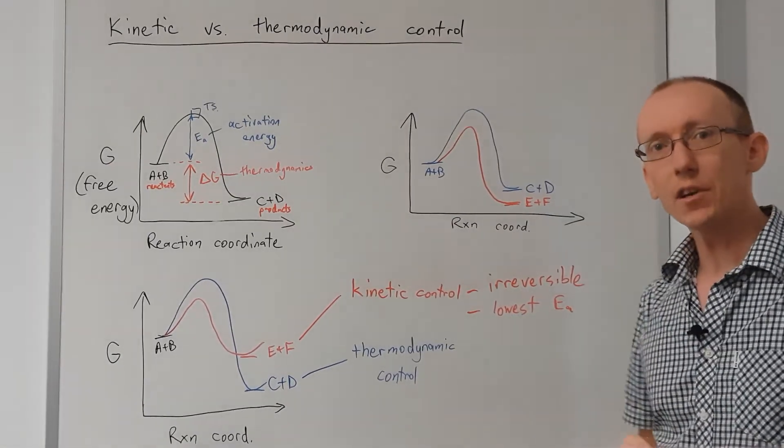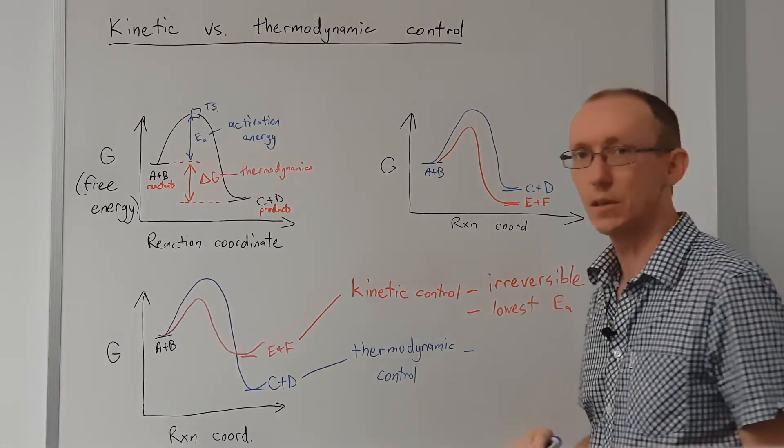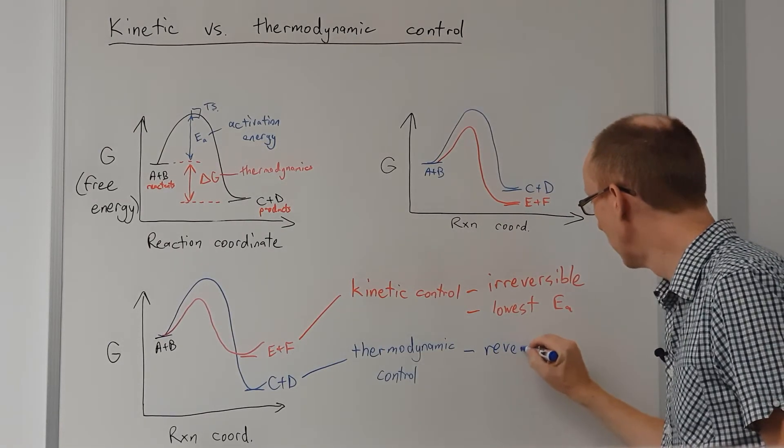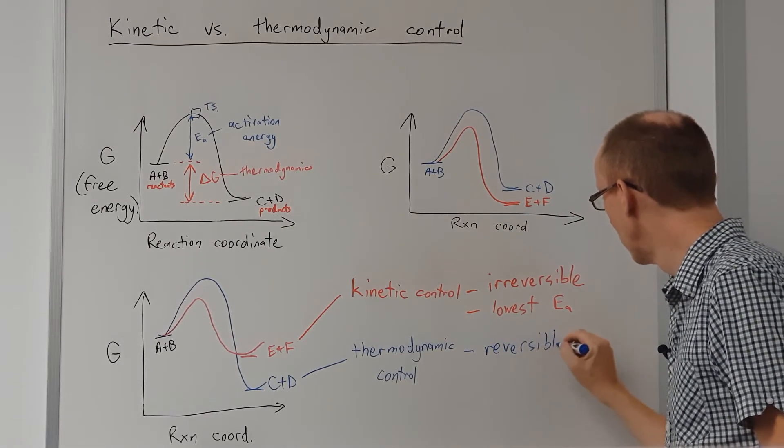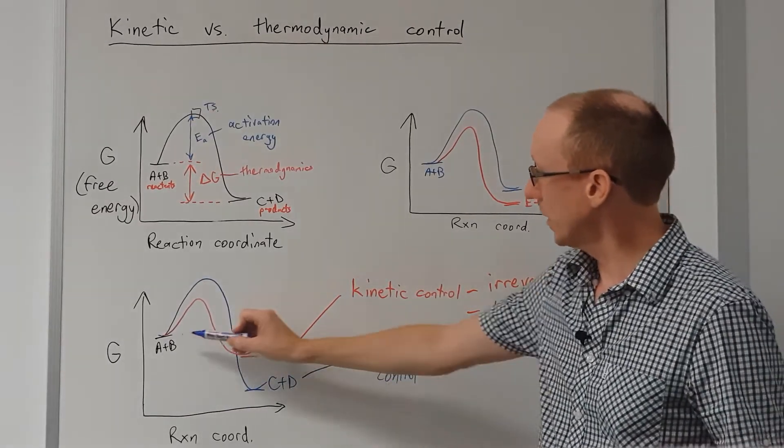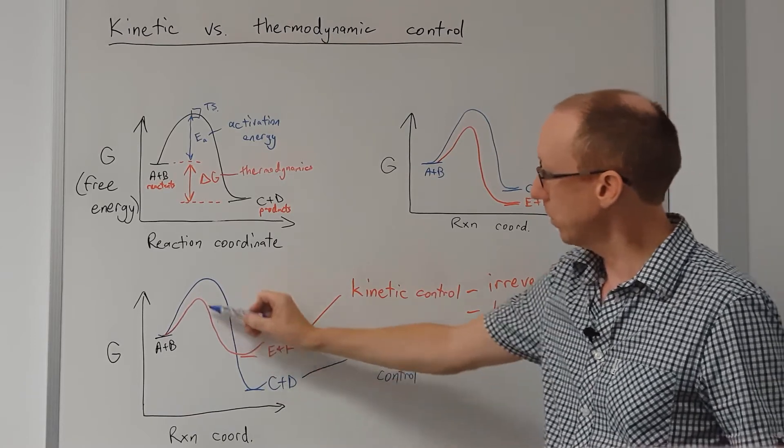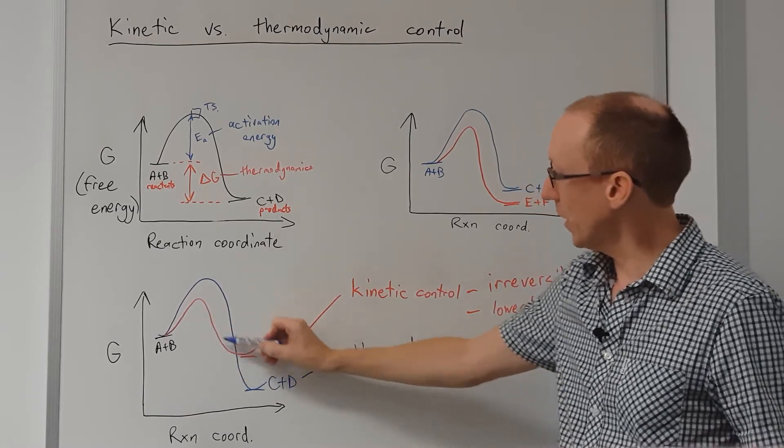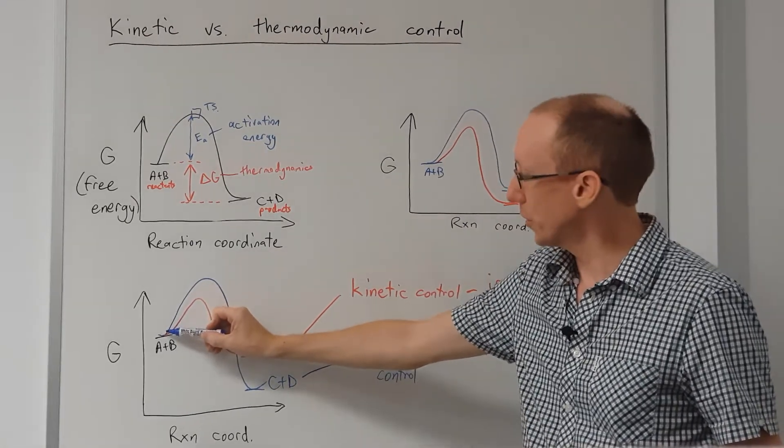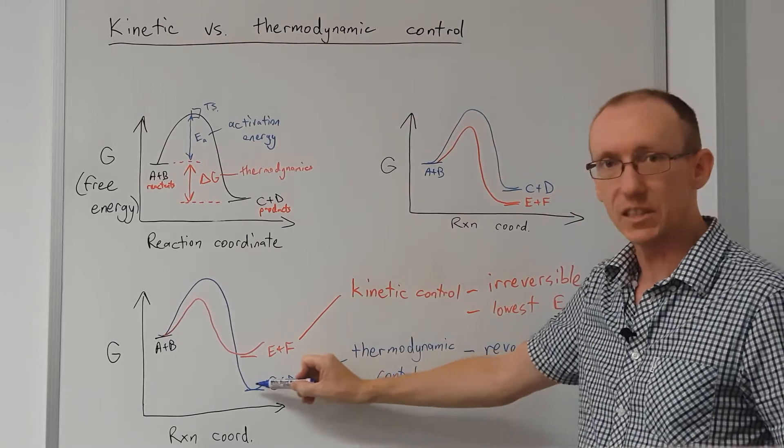To get thermodynamic control we're going to use higher temperatures or conditions that will make the reaction reversible. Okay? If we get this reaction being reversible, we're going to get initially the faster product to form will be E plus F. But if we have enough energy, when we sometimes collide these two molecules, we'll get over that larger activation energy and down the more stable product.